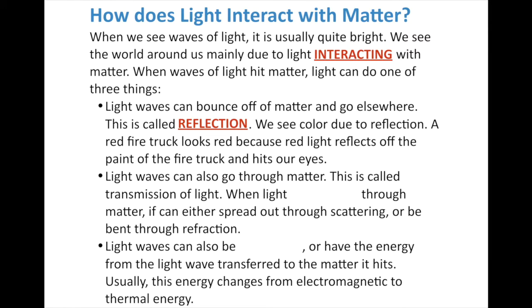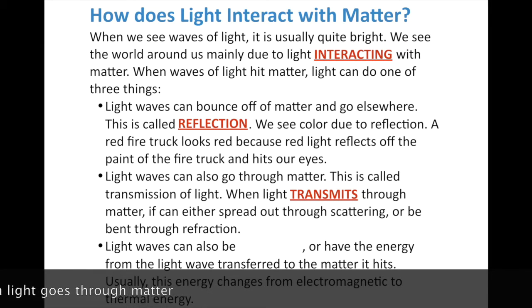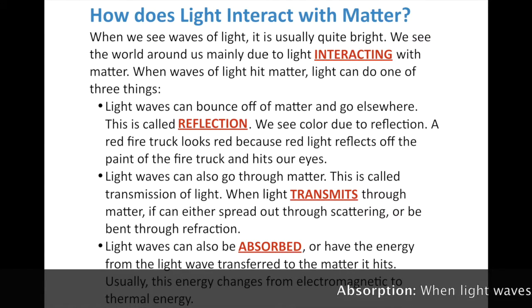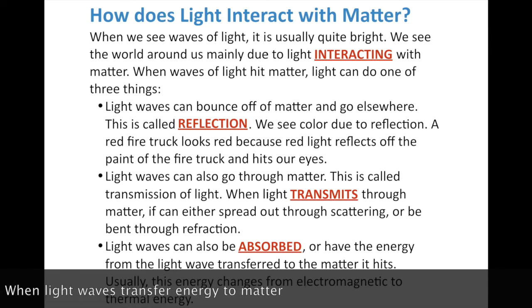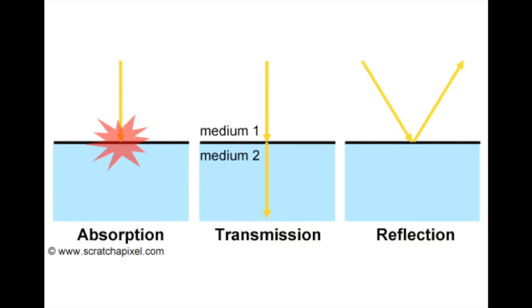Light waves can also go through matter — this is what we call the transmission of light. When light transmits through matter, it can either spread out through scattering or be bent through refraction, or it can just go straight through depending on how clear the object is. Finally, light waves can also be absorbed, meaning the energy from the light wave transfers to the matter it hits — it doesn't pass through or bounce off. Usually this energy changes from electromagnetic to thermal energy, which is why shining a light on an object makes it get warm over time.